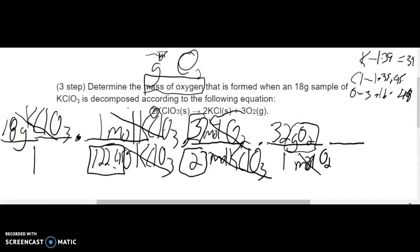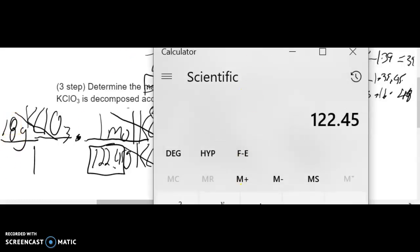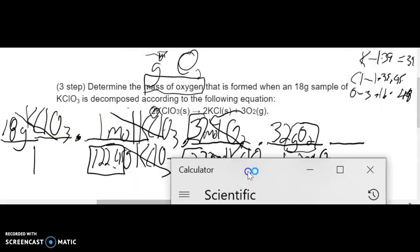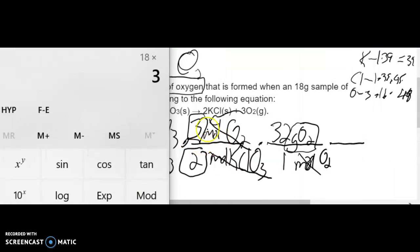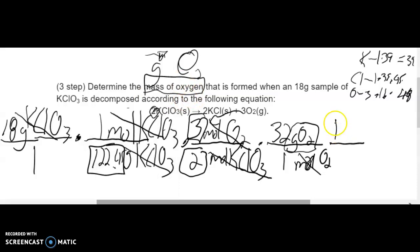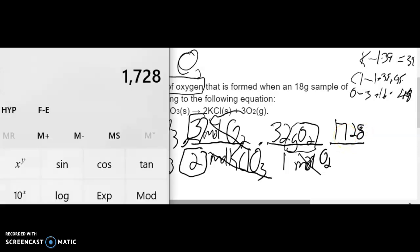So it's going to be 18 times 1 times 3 times 32. 1,728, so that's going to be my top number.